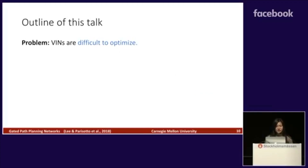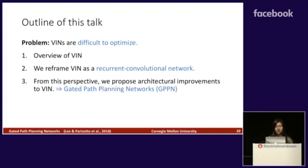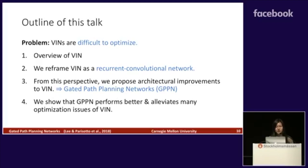Despite their effectiveness, VINs are difficult to optimize. To give an outline of this talk: first I will give a quick overview of VIN. Next, we reframe VIN as a recurrent convolutional network. From this perspective, we propose architectural improvements to VIN, which we call the gated path planning networks. Lastly, we show that GPPN performs better and alleviates many optimization issues of VIN.